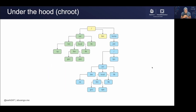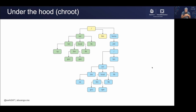Here is another representation: we have our root directory at the top, then home, and a folder called 'joe' inside it. We want to jail the user joe or the process joe to the joe directory so it cannot access anything else. We create a new root inside it — its own bin, user, and other necessary folders. Any time joe tries to access root, or slash bin, or slash var, they are limited to everything inside /home/joe.